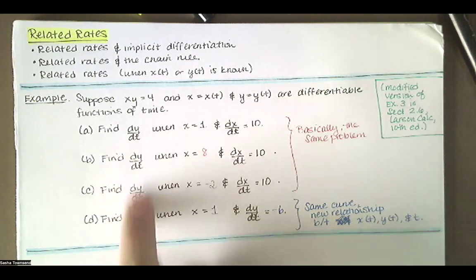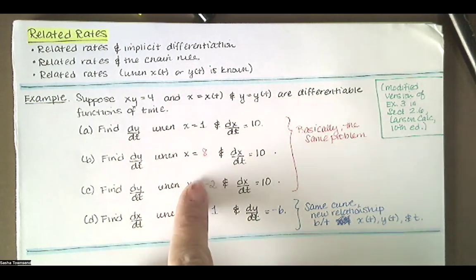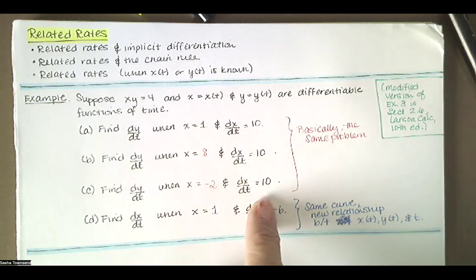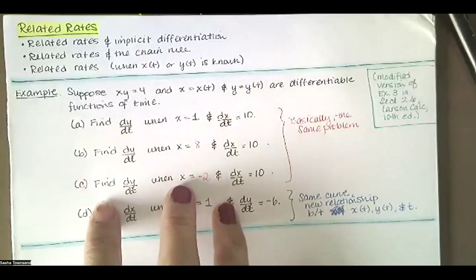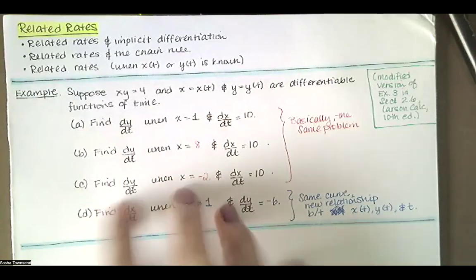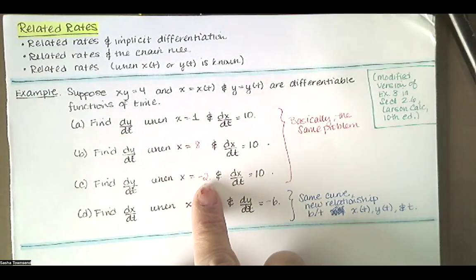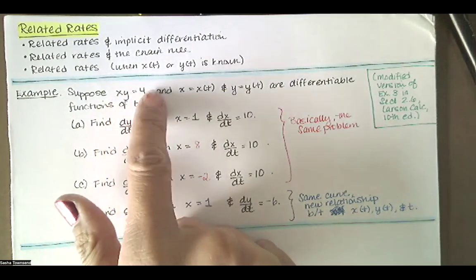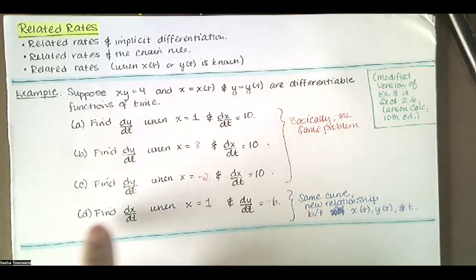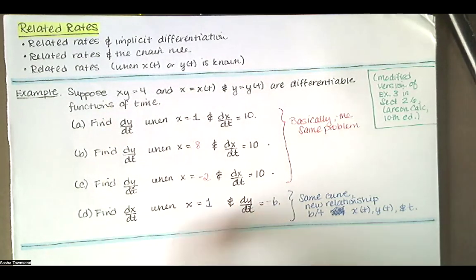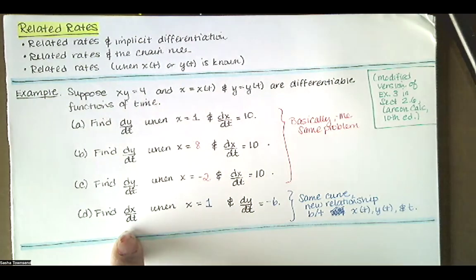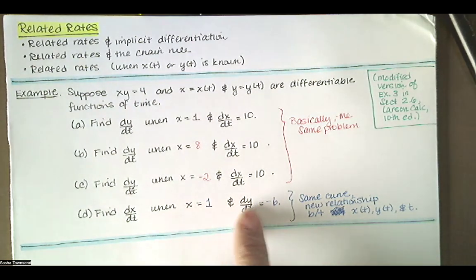We're asked to find dy/dt at several x values when the rate of change of x with respect to time is known. Those are all basically the same problem — we're looking at three different points on the curve given by xy equals 4. For the fourth one, we're asked to find dx/dt at a particular x value when we know the rate of change of y. This is a little different — x and y are still related by xy equals 4, but now we know dy/dt instead of dx/dt.